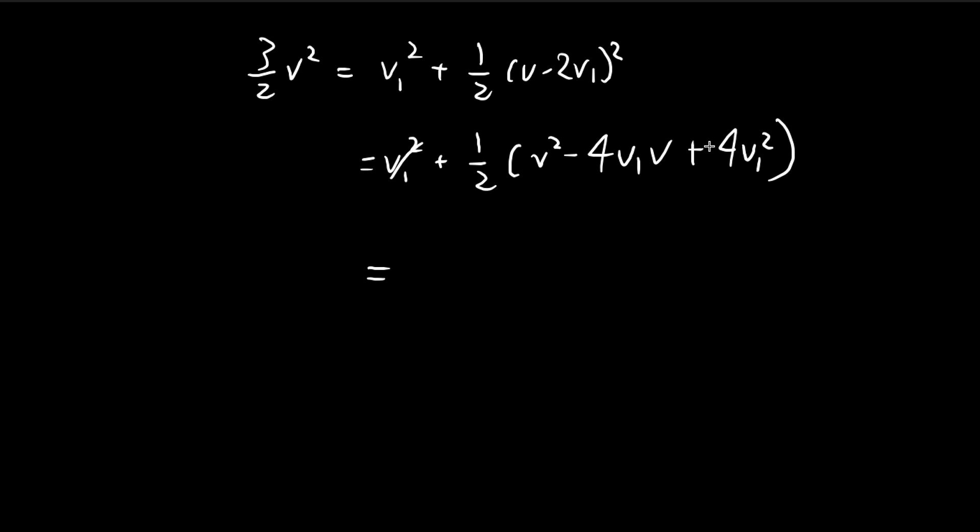So the v1 squares, we have three of these. So don't forget the 1 half here. We have three v1s, and then minus 2v1v. And then we have a plus 1 half v2, and then minus the 3 over 2 v2, we get minus v2 equal to 0.